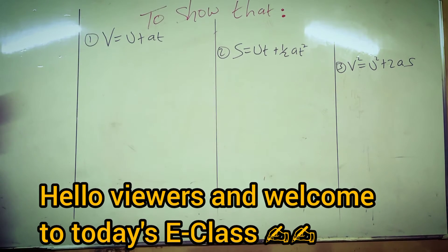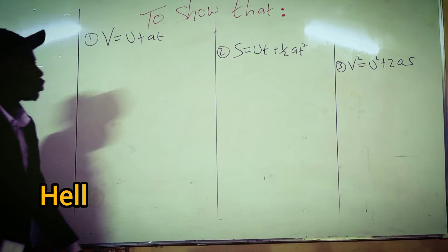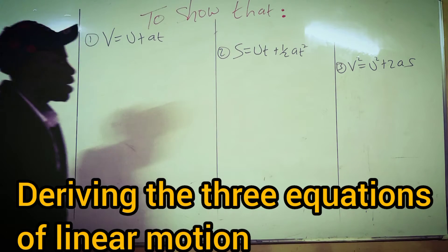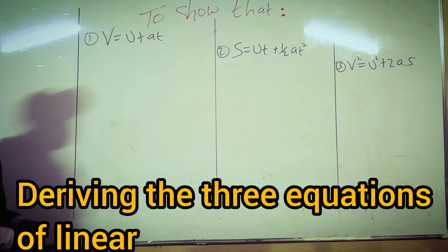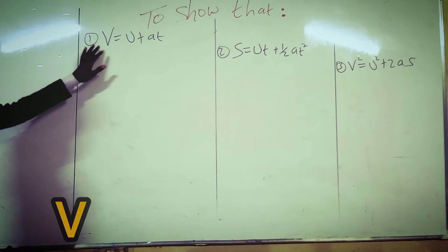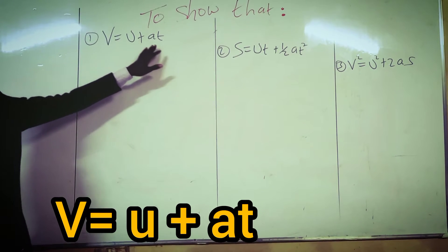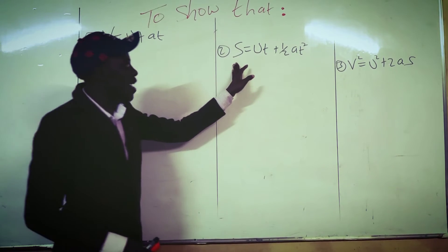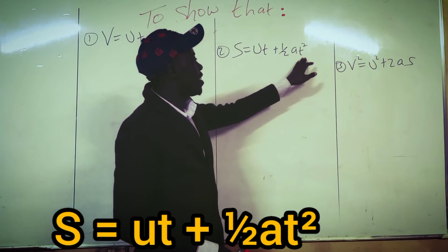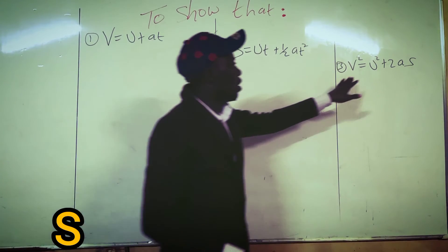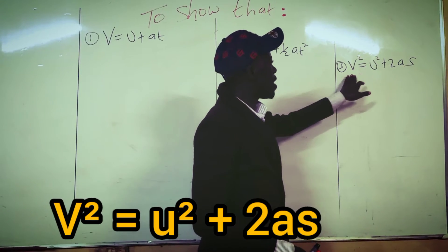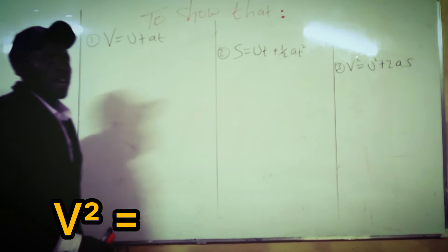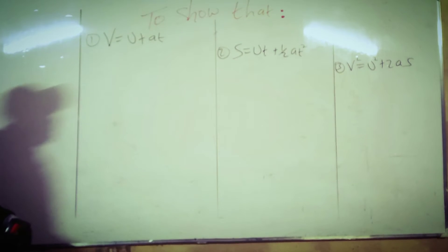Hello viewers and welcome to today's E-class. Today we want to derive the three equations of linear motion — Newton's equations of linear motion: V equals U plus AT, S equals UT plus half AT squared, and V squared equals U squared plus 2AS. Remember, those are the three equations of linear motion.